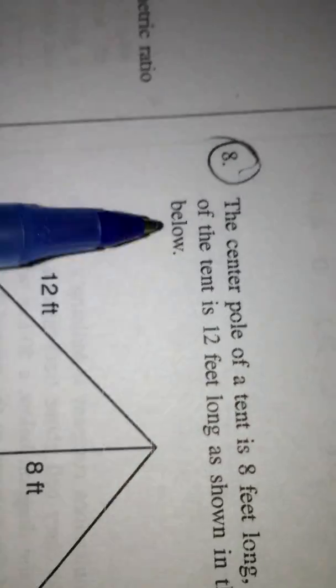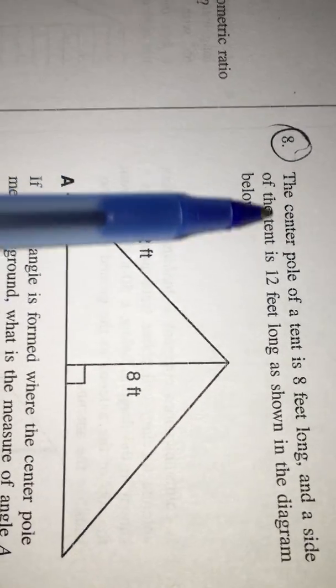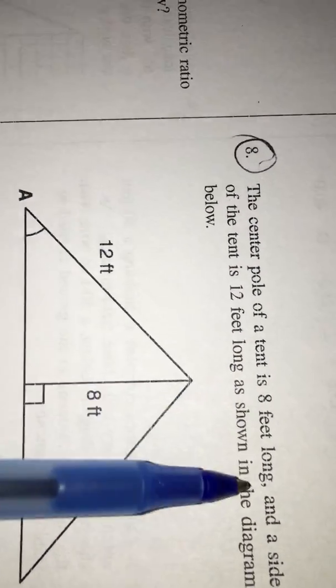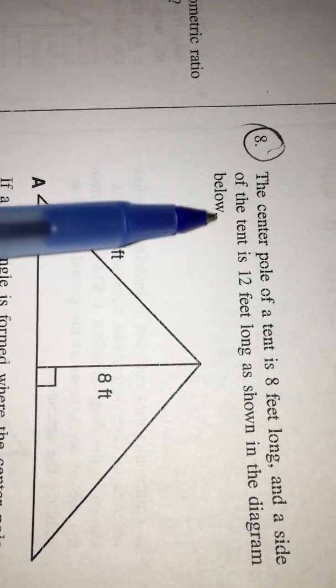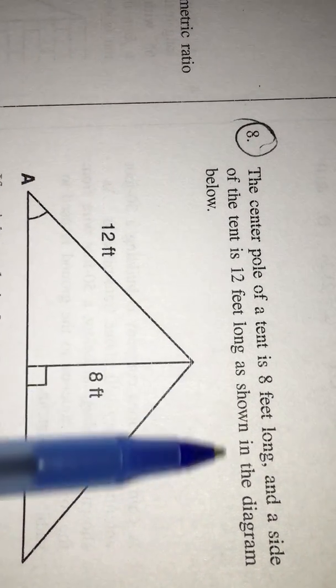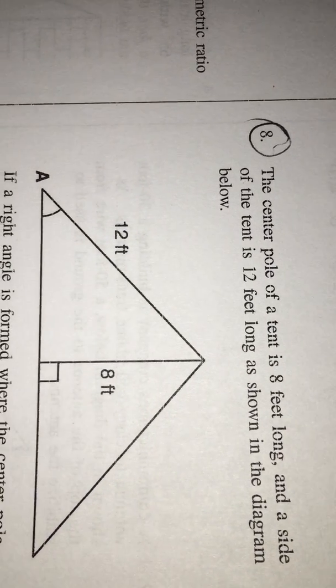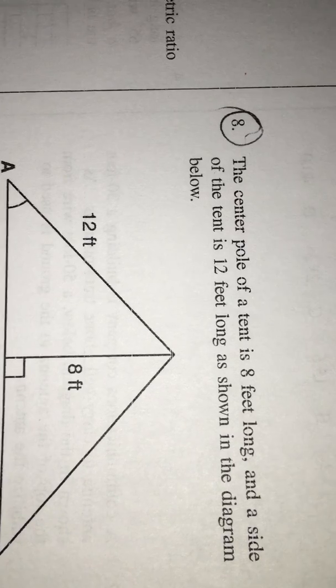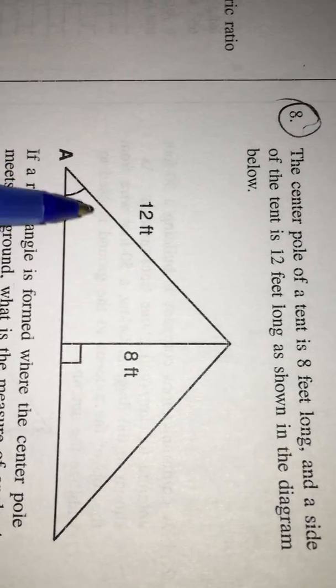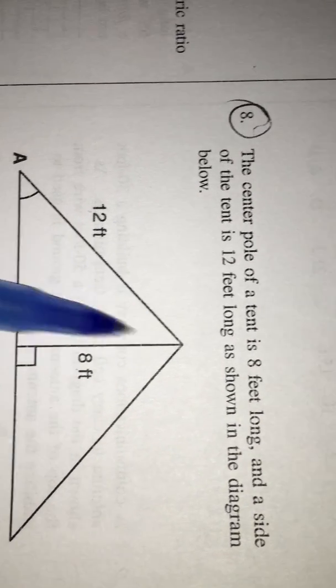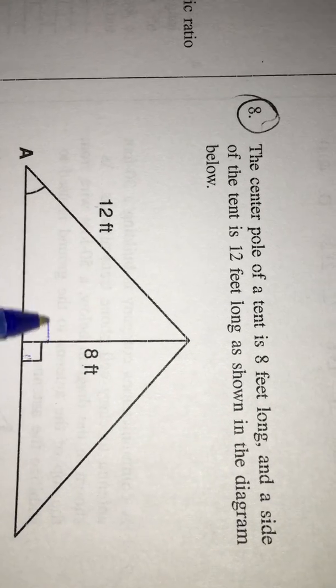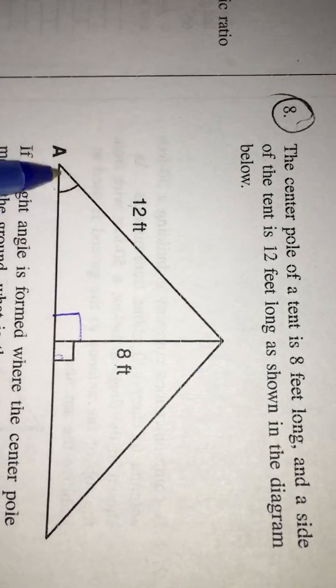Next, I want to model you question number 8. What is this 8th problem saying? The center pole of a tent is 8 feet long and the side of the tent is 12 feet long as shown in the diagram below. If a right triangle is formed where the center pole meets the ground, what is the measure of angle A to the nearest degree? So this is 12, this is 8 in this right angle triangle. If it is 90, this must be 90 and this angle they are asking.